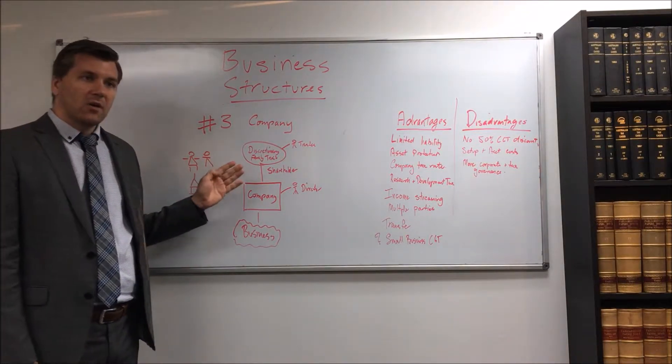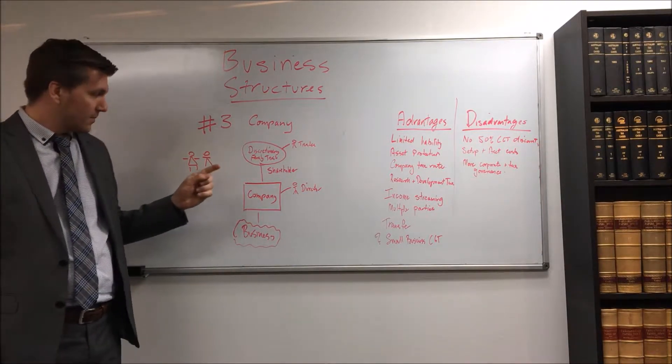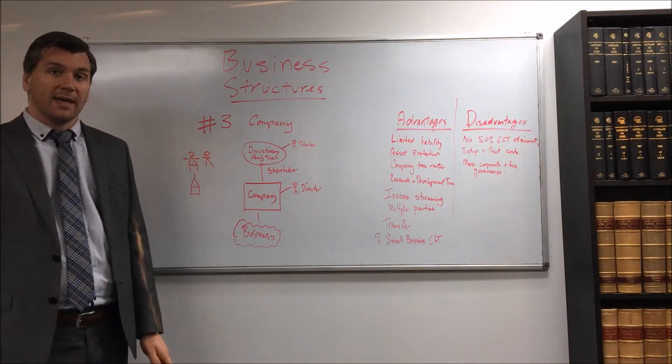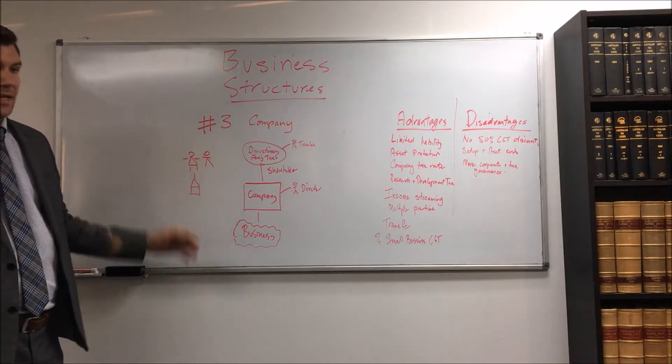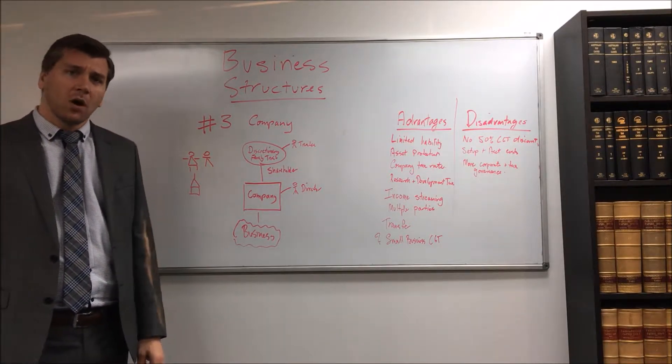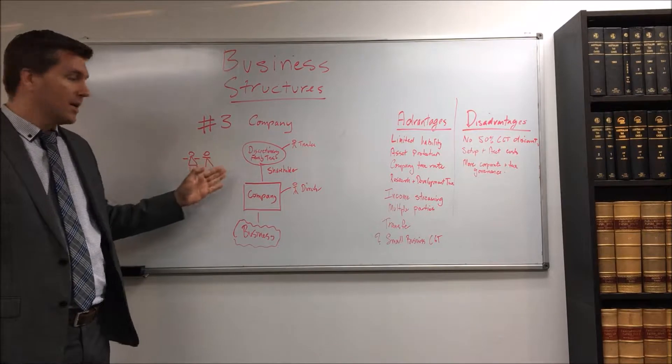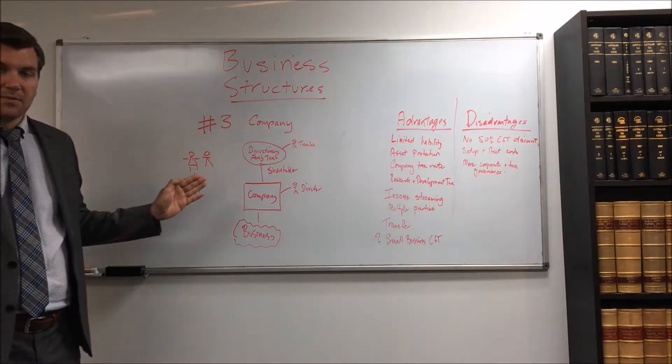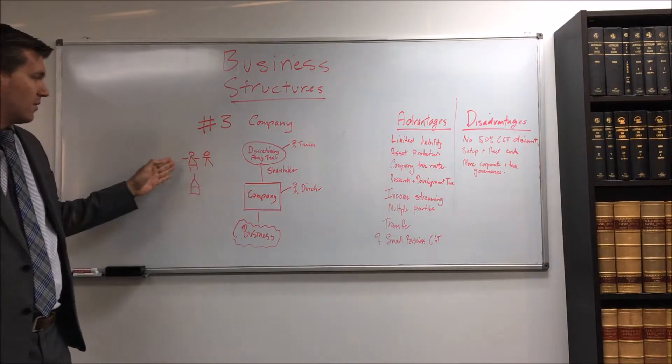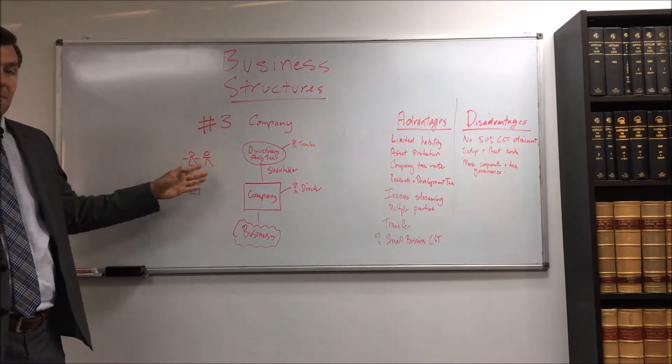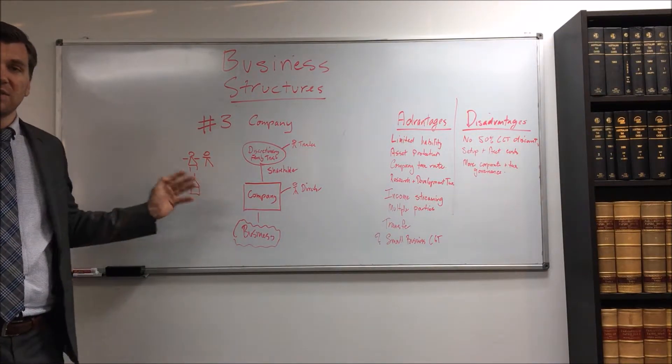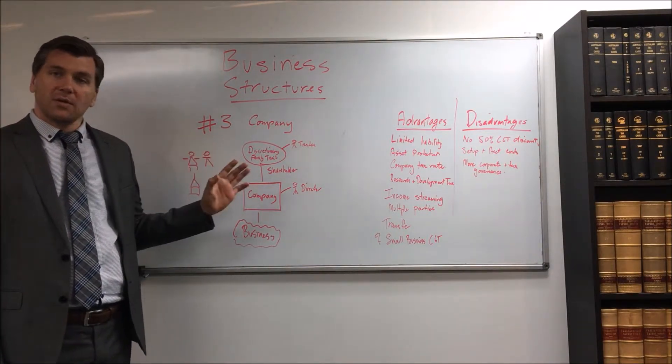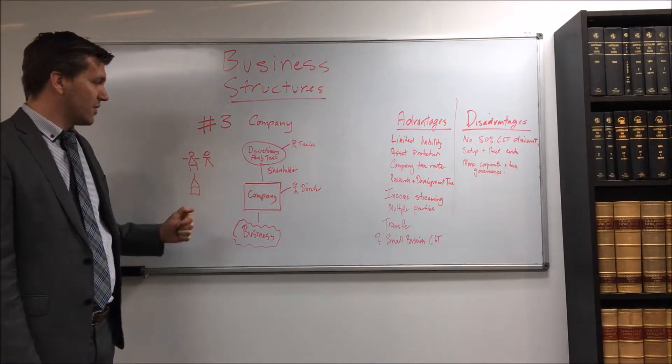Now I'm going to start off as to why we have our shareholders a discretionary trust. Now you can have individuals as the shareholders and it used to be common to have a different class of shares for different people. So you'd have the husband and wife each have A and B class shares and the children might have C, D, E class shares. Now it's more and more common to have just ordinary shares held by discretionary trust.